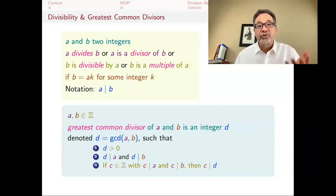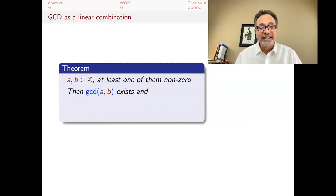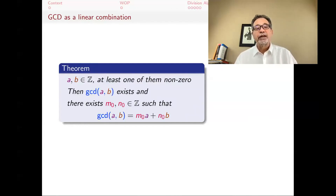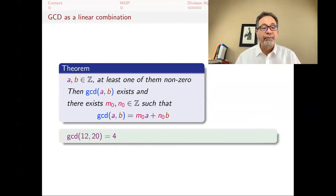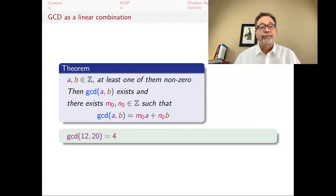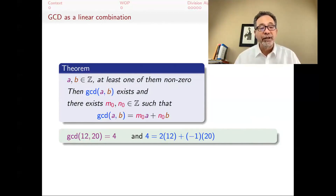If both A and B are zero, the greatest common divisor would not exist. The theorem we want to prove is that if at least one of them is non-zero, then the greatest common divisor exists — and moreover, you can find two integers M₀ and N₀ such that GCD(A, B) = M₀A + N₀B, a linear combination of the two. For example, GCD(12, 20) = 4, since 4 divides 12 and 4 divides 20, and nothing bigger can. And indeed 4 = 2·12 + (−1)·20, so M₀ = 2, N₀ = −1.